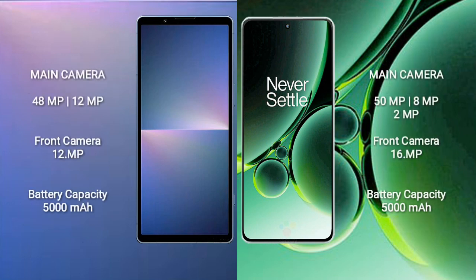Sony Xperia 5 Mark 5 has a rear dual camera setup: 48MP plus 12MP, and a front camera of 12MP. OnePlus Nord 3 has a rear triple camera setup: 50MP plus 8MP plus 2MP, and a front camera of 16MP.